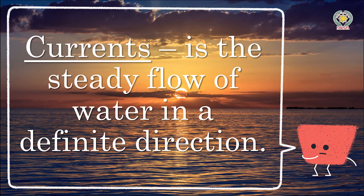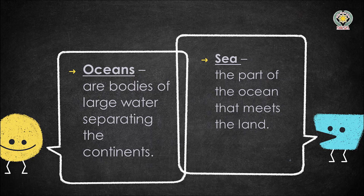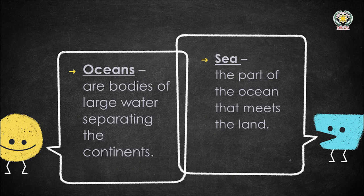Now, one of the objectives was to talk about the ocean. What is the difference between an ocean and a sea? Oceans are bodies of large water separating the continents, and 70 percent of the earth is covered with water. Do you know how many continents there are? You should know. Now, a sea is the part of the ocean that meets the land.